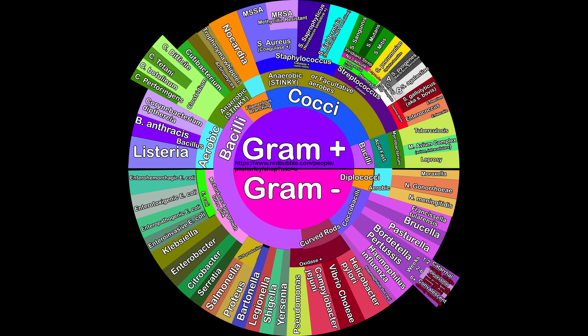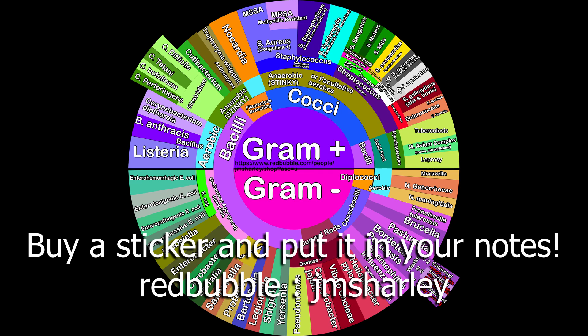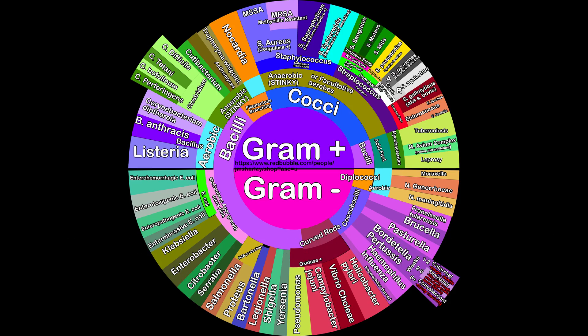What's up, guys? If you need a way to study common gram-positive and gram-negative bacteria, I made a graphic that breaks them down into certain categories in a visual way. I won't go into great detail, just a fly-by. You can always screenshot it, print it out, or even buy a sticker to put it in a notebook. Link in the description to my Redbubble account where you can find those stickers. Let's jump right in.